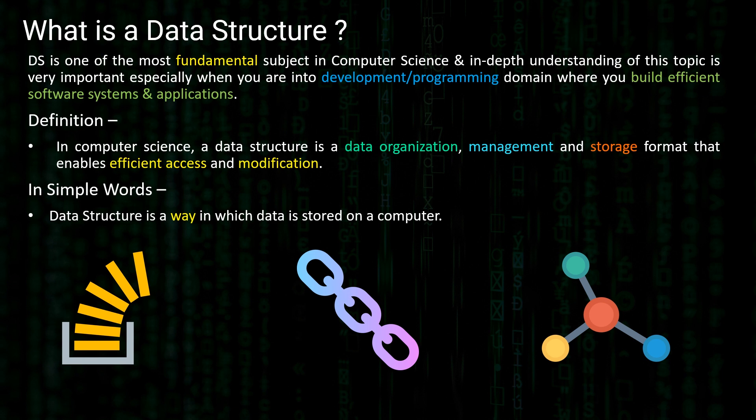Starting off with a little bit of theory on data structures — what exactly is a data structure. Data structure is one of the most fundamental subjects in computer science. More than knowing a programming language, it is very important that you understand data structures and implement algorithms based on them. This is especially important in the development and programming domain where you build efficient software systems and applications. The word 'efficient' is very important and we'll talk about it as we move ahead.